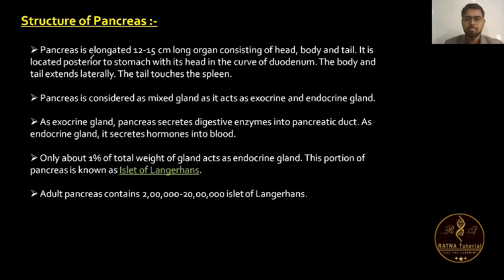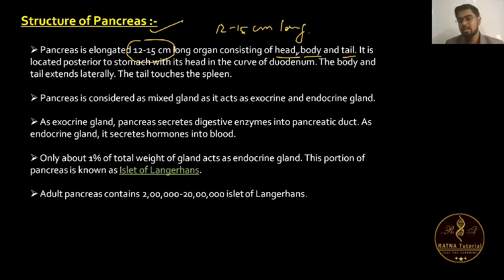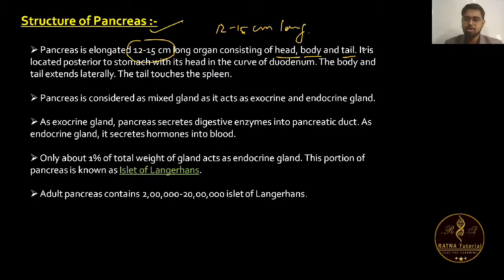Structure of pancreas: the pancreas is elongated, 12 to 15 cm long, consisting of head, body, and tail. The part toward the duodenum is the head, the part toward the spleen is the tail, and the middle part is the body.